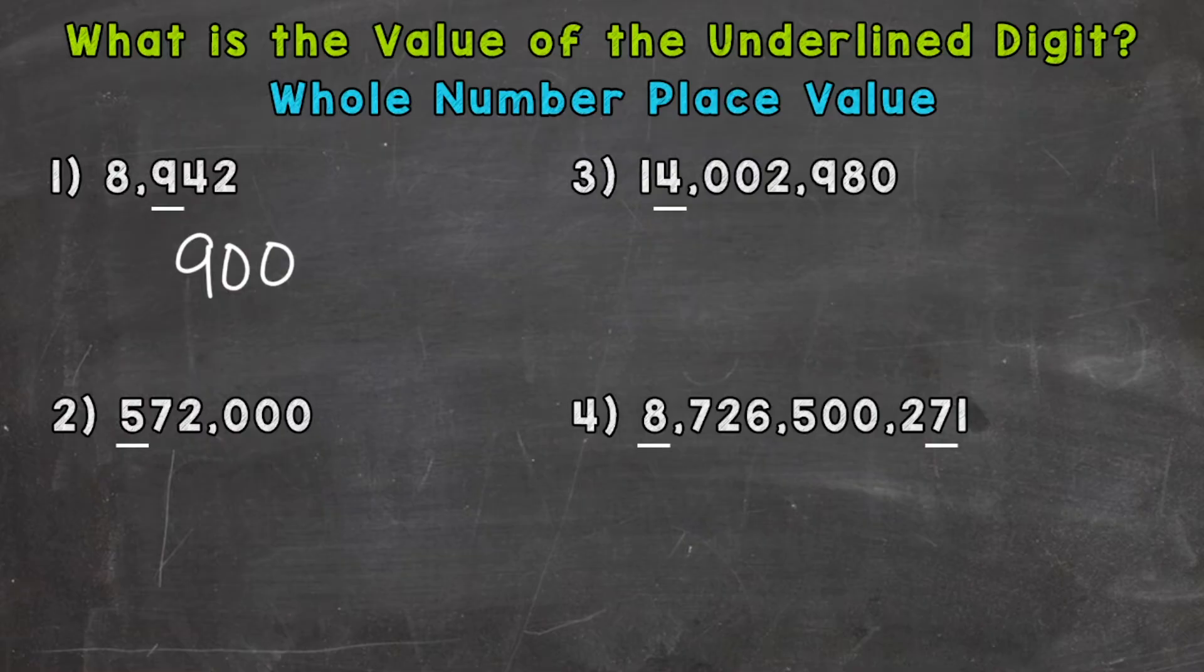All right, let's try a few more. So on to number two, where we have 572,000. And the digit that's underlined is the 5. So first thing we need to do is determine the place in which it is sitting. And that place will determine its value. So the 5 is in the hundred thousands place. So the value of that 5 is going to be 500,000. So let's write down 500,000.